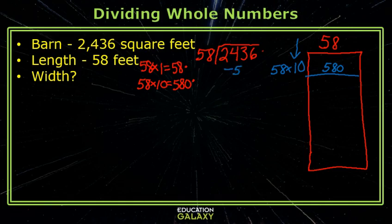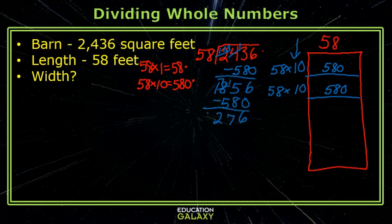Next, I subtract 580. Be careful with your subtraction. I can take out another set of 580. I'll write 58 times 10 to keep up with my partial quotient, and I subtract 580.